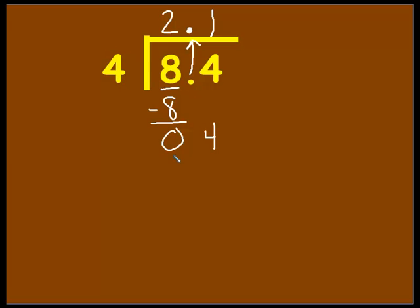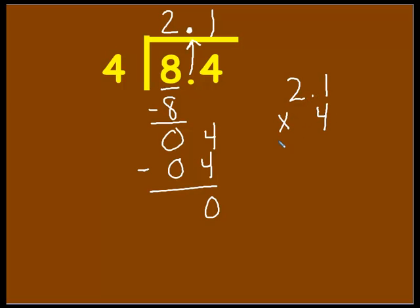Then we multiply: 1 times 4 is 4. Subtract — we don't have a remainder, and there are no other digits to bring down, so we're done. We can check with multiplication: 2 and 1 tenths times 4. Thinking of it as 21 times 4 — 4 times 1 is 4, 4 times 2 is 8. Now we go back and get that decimal. We have one digit behind the decimal in the factor, so we put one digit behind the decimal in the product. 8 and 4 tenths — we match up, so we're good.